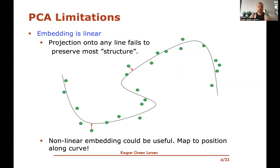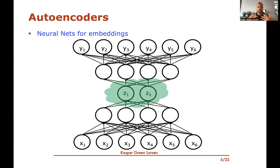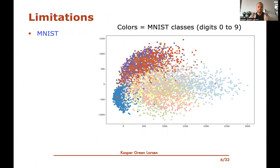PCA has some limitations — in particular, it's a linear embedding. If your data has non-linear structure, PCA will always fit a line and you'll lose a lot of information. The position along a curve, for instance, might be a better representation. This motivates wanting non-linear embeddings, one choice being autoencoders: neural networks with a special bottleneck layer, where the output tries to reconstruct the input, and the bottleneck neurons serve as a compressed representation.